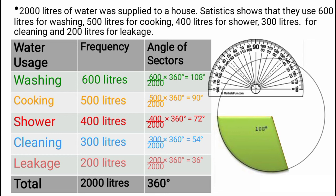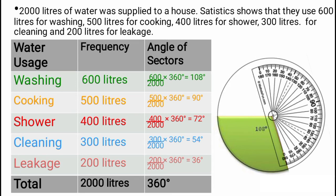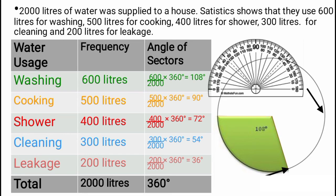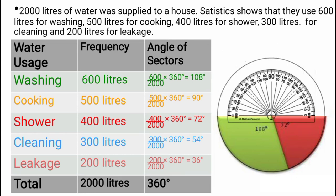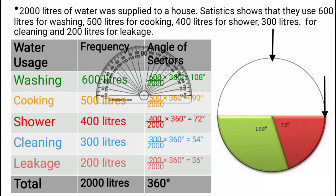Let's do shower — that's 72 degrees. Remove the protractor, place it, and make sure the lines are aligned to increase accuracy. Mark zero and 72, then take the points and draw from the center of the circle. For cooking, we do the same. Move the protractor, set it from zero to 90, mark out the point, and draw from the center.